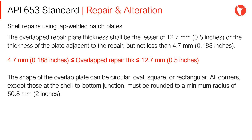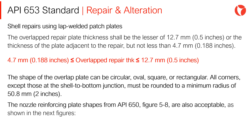The shape of the overlap plate can be circular, oval, square, or rectangular. All corners, except those at the shell-to-bottom junction, must be rounded to a minimum radius of 50.8 mm. The nozzle reinforcing plate shapes from API 650 figure 5.8 are also acceptable, as shown in the next figures.